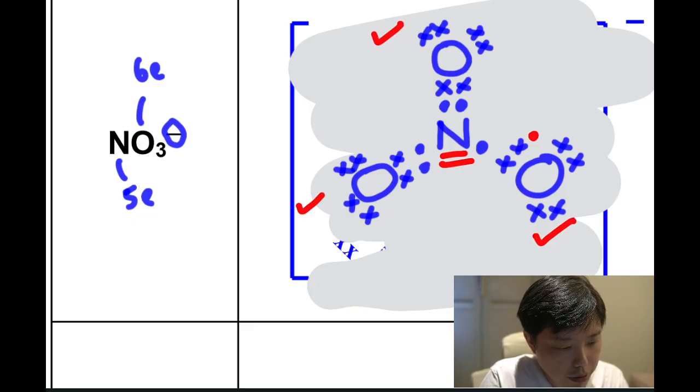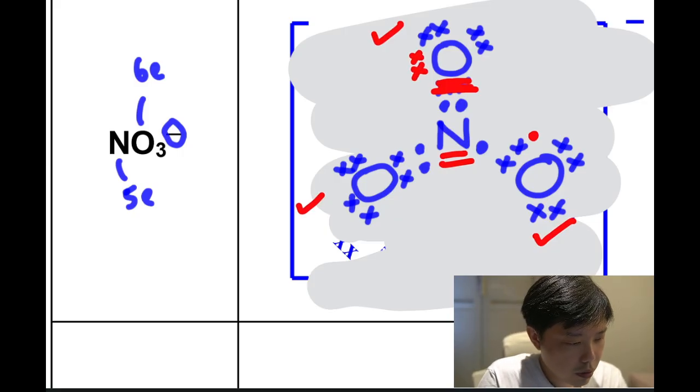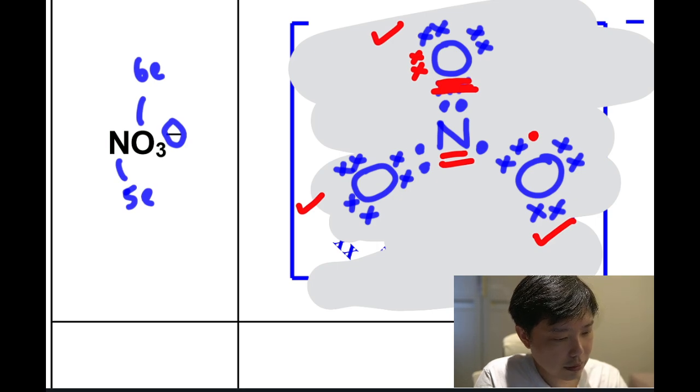So what we need to do is we need to convert one of these to a dative bond. So what I'm going to do, very simple. I'm going to take away these two and shift it to the side. All right, so in this way, I will get this lone pair on top to dative bond to oxygen.